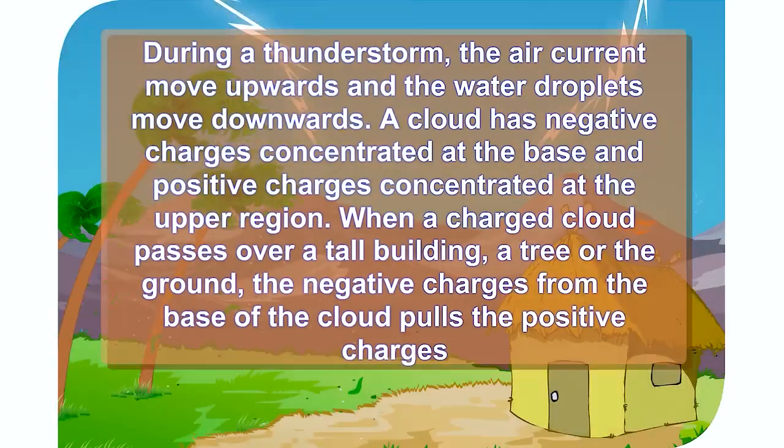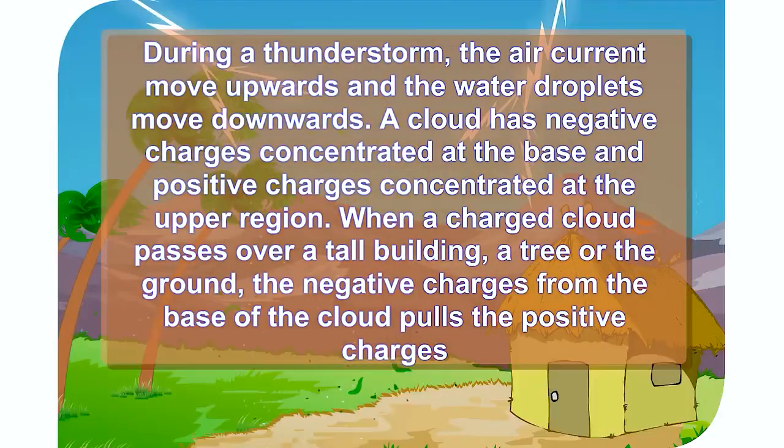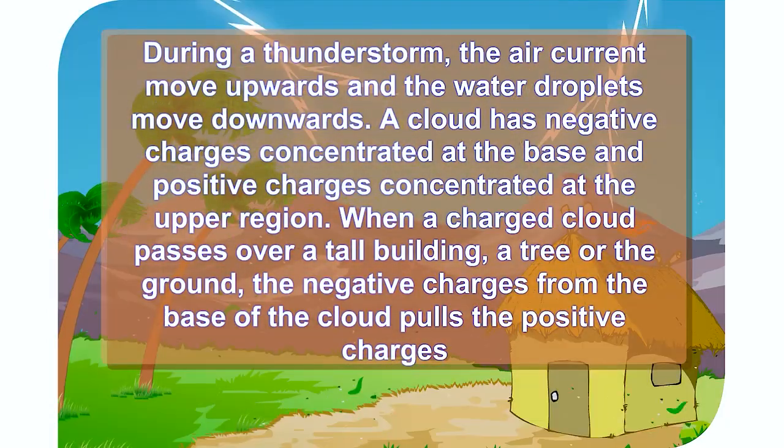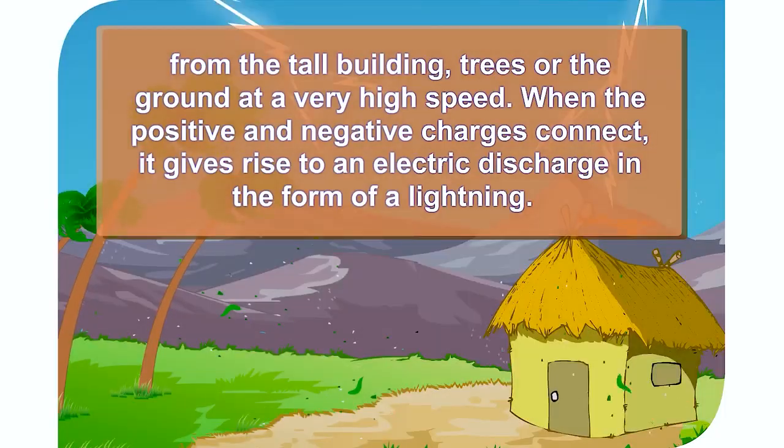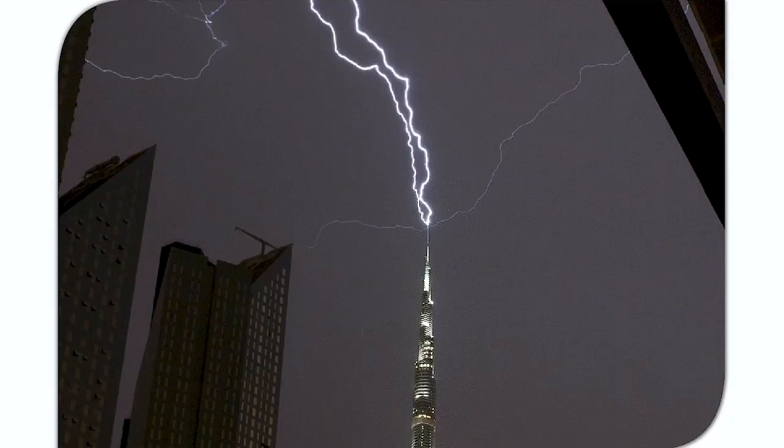During a thunderstorm, the air currents move upwards and the water droplets move downwards. A cloud has negative charges concentrated at the base and positive charges concentrated in the upper region. When a charged cloud passes over a tall building, a tree, or the ground, the negative charges from the base of the cloud pull the positive charges from the tall building, trees, or the ground at a very high speed. When the positive and negative charges connect, it gives rise to an electric discharge in the form of lightning.